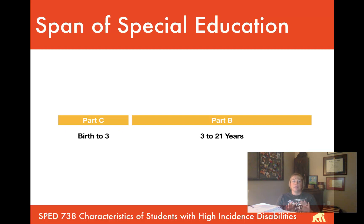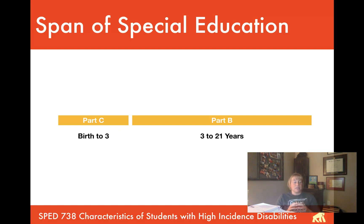It's really more of a family-centered approach to providing services for children birth to three. Once they reach three, they transition into their public school and become part of Part B, which covers ages three to 21. K-12 schools are required to provide services if the student qualifies, up to age 21. Sometimes kids transition out of their senior year into a life skills or work-based program, continuing to develop independent living and work skills until age 21, since services don't necessarily end at 18 if additional supports are needed.